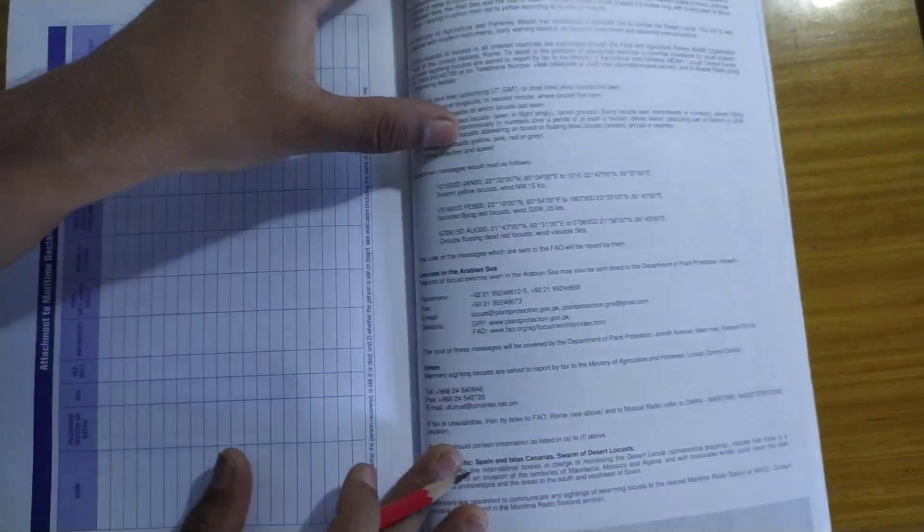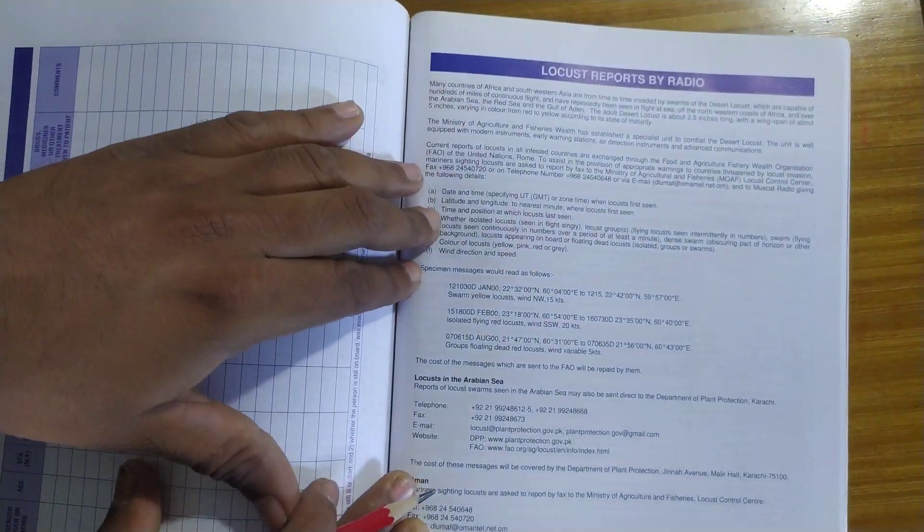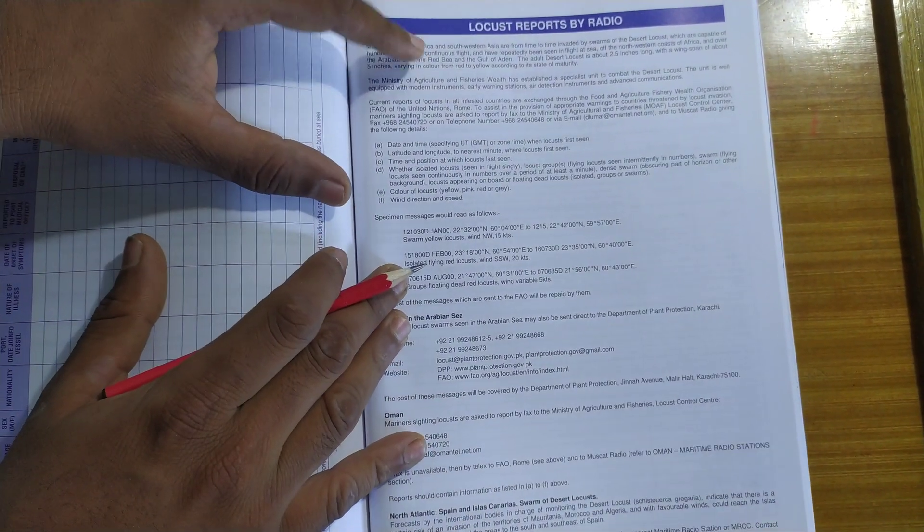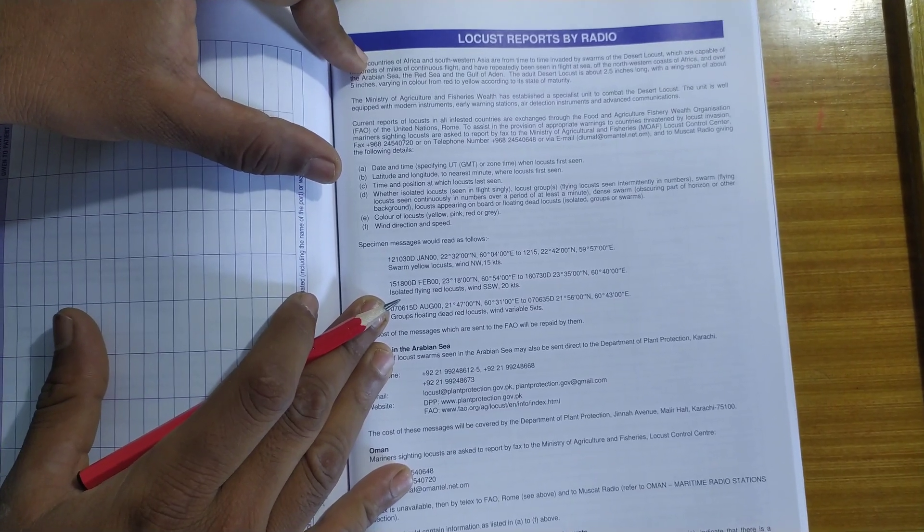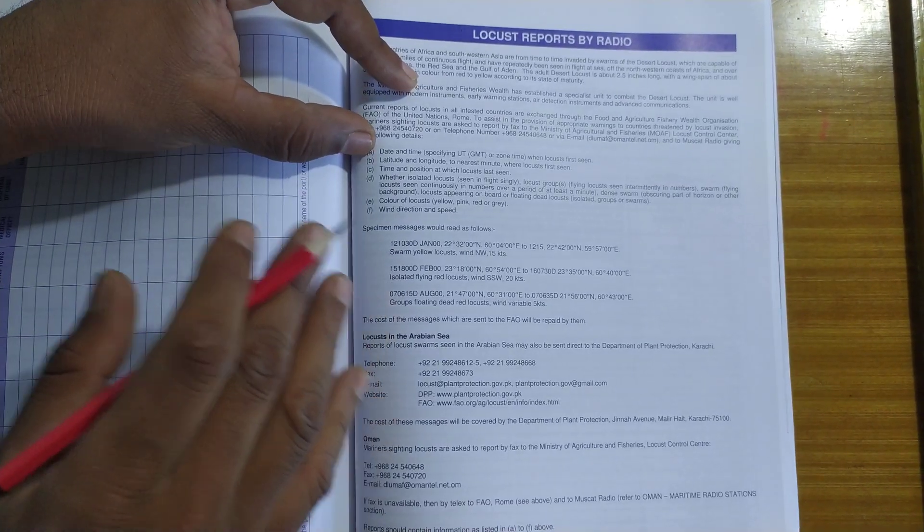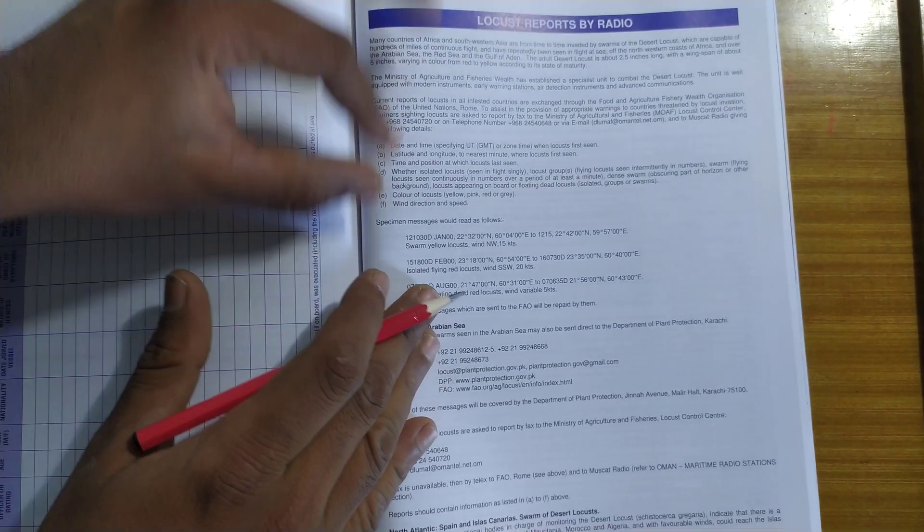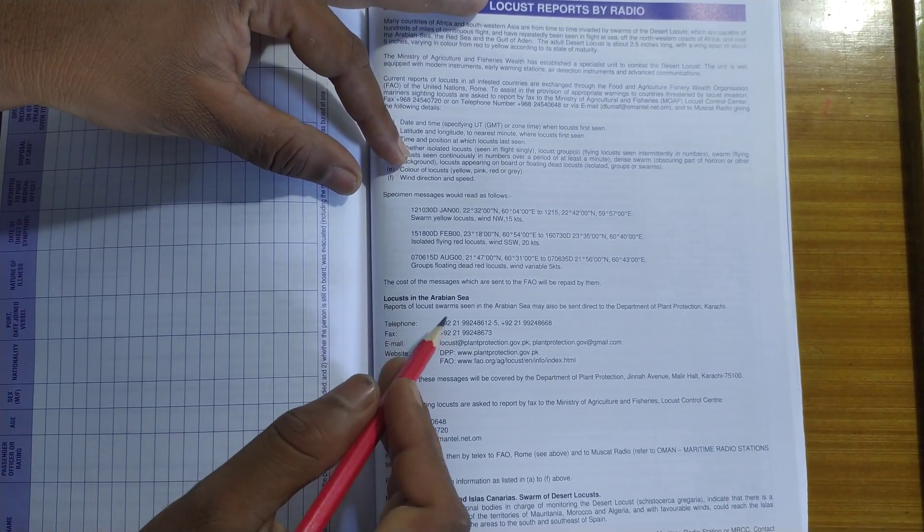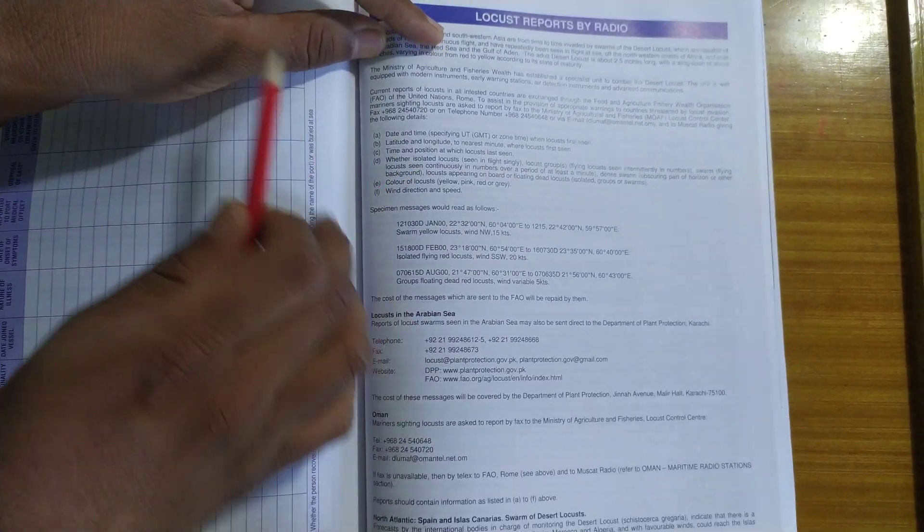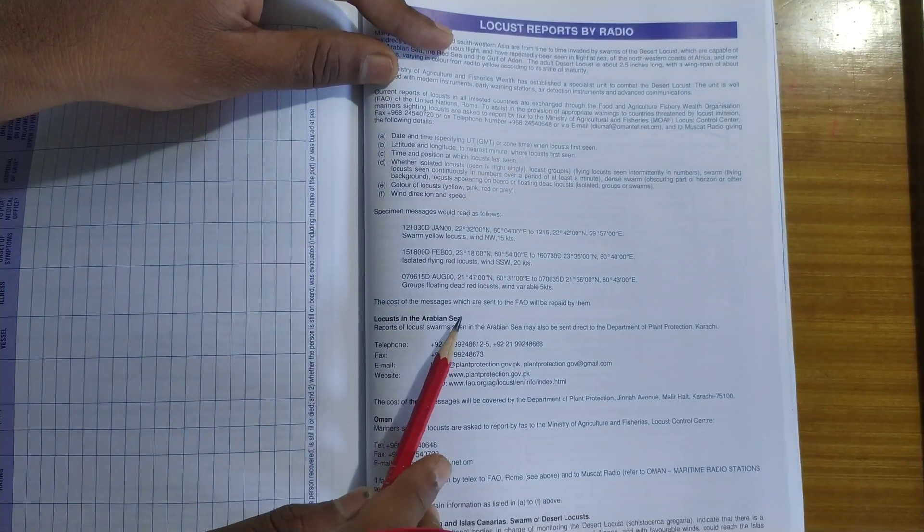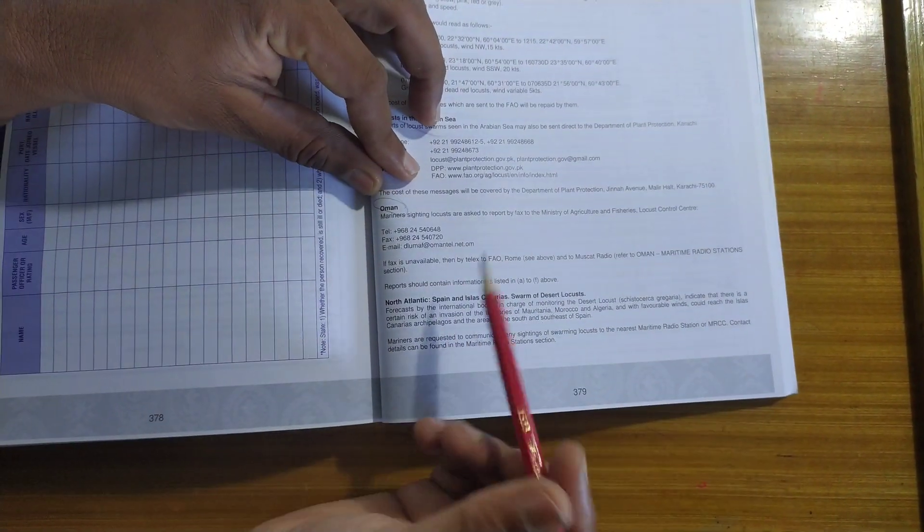Next comes locust reporting. Locusts are basically grasshoppers, and they are basically found towards African coast. Whenever you observe locusts, you have to warn the country nearby about the locust flights you have observed. So these are the contact details. This is for Muscat radio. Next comes for the Arabian Sea, for Oman, North Atlantic Spain and Canaries.